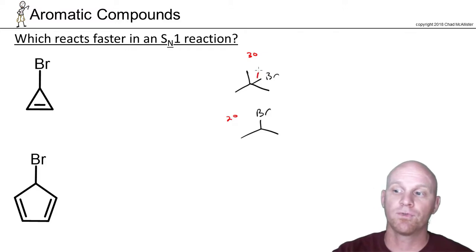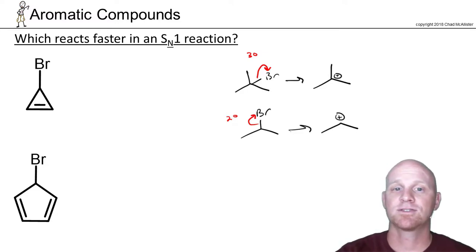I want to remind you of why. The first thing that happens in an SN1 reaction, the rate determining step, is the leaving group just leaves. In this case we're going to end up with a tertiary carbocation. In this example we'd end up with a secondary carbocation, and because the tertiary carbocation is more stable, that's why the top reaction is faster. It's all about forming the most stable carbocation.